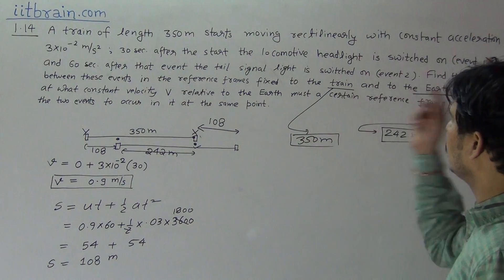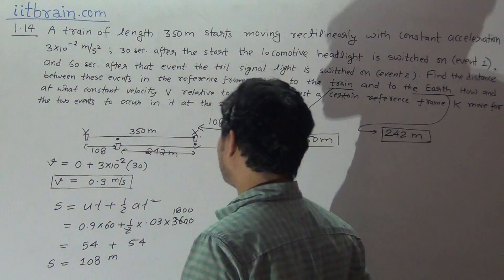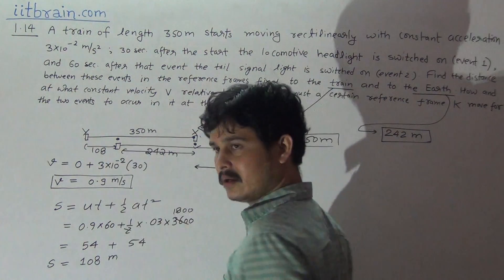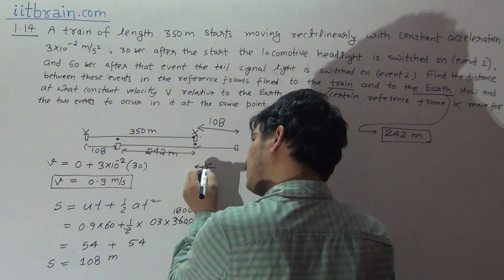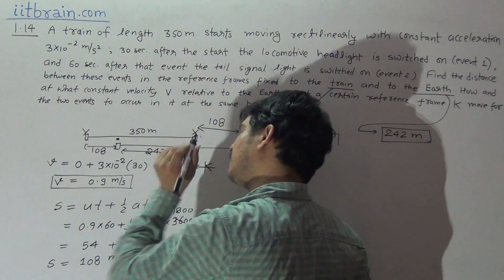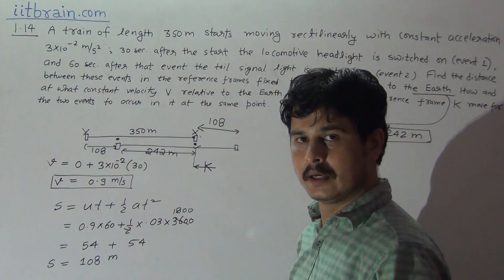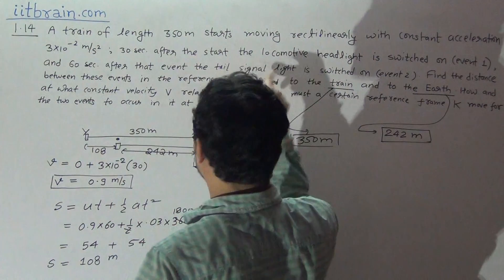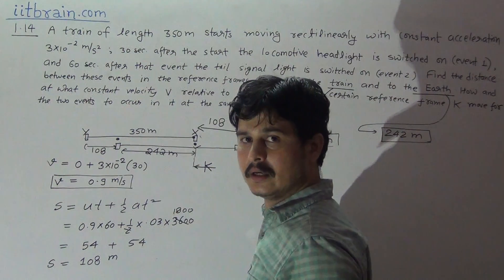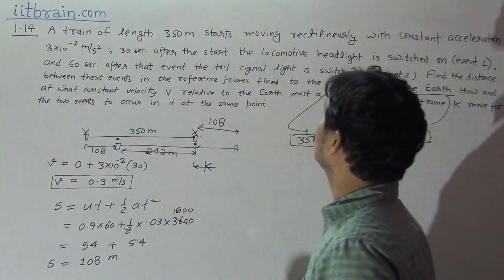Now for the second part: at what constant velocity relative to the earth must a certain reference frame K move so that both events occur at the same point in that frame? Consider an observer in frame K who is at the position of the headlight when Event 1 occurs. For Event 2 — the tail signal switching on — to also occur at the same point, that observer must travel exactly 350 meters in 60 seconds, covering the gap between headlight and tail signal.